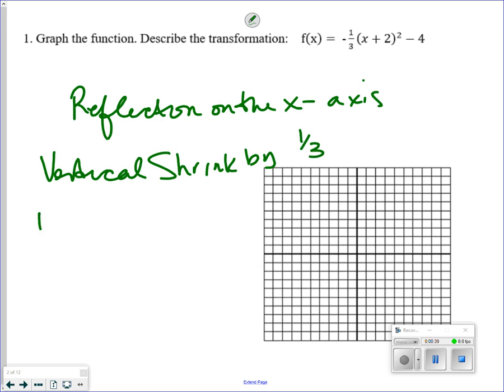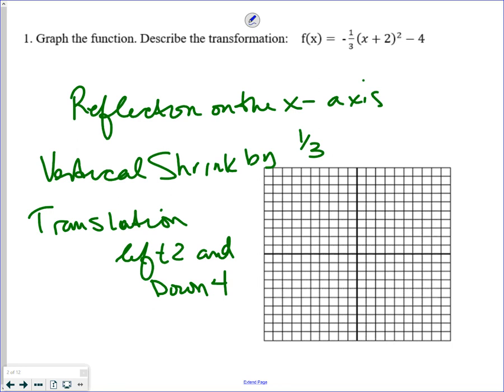And now you're talking about a translation to the left 2, and down 4. Graphing, the vertex again is at negative 2, negative 4. So negative 2, negative 4 is the vertex.